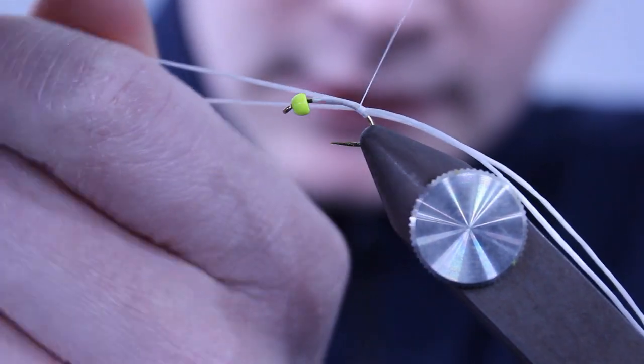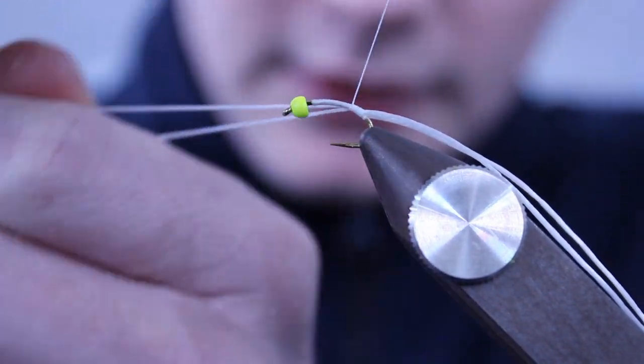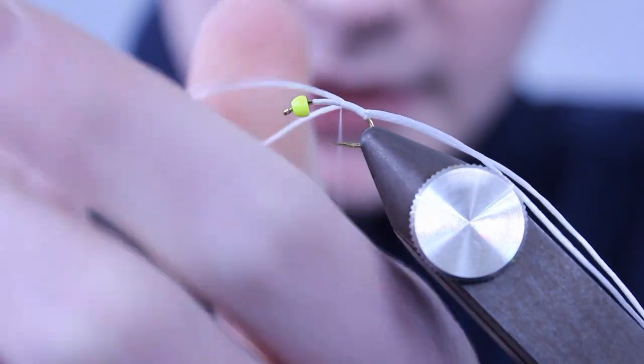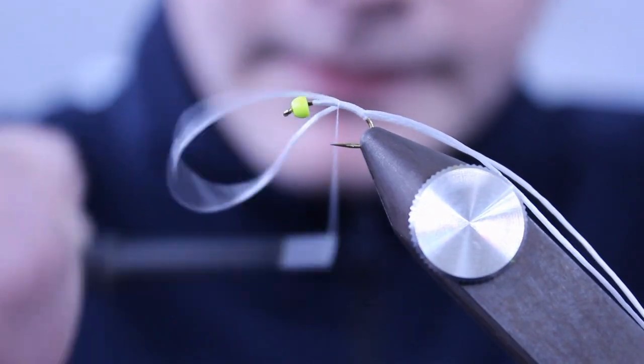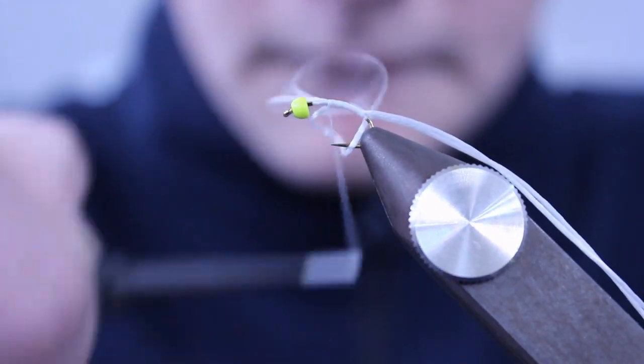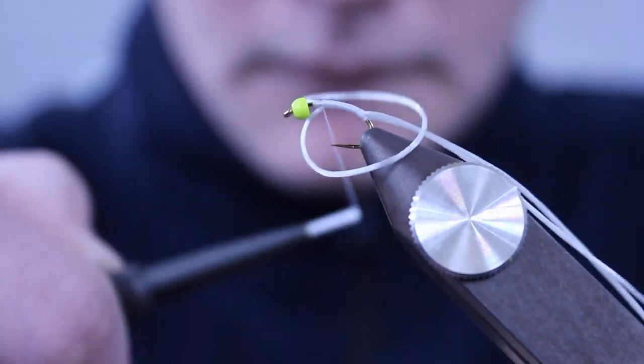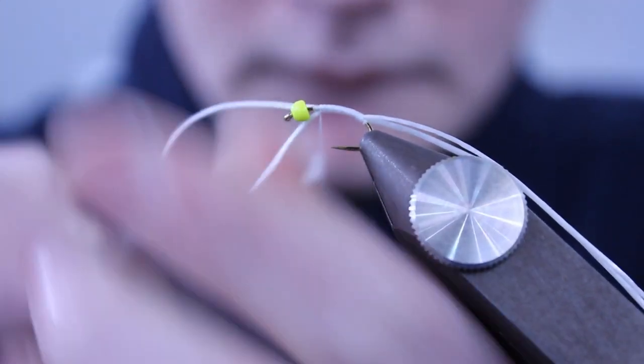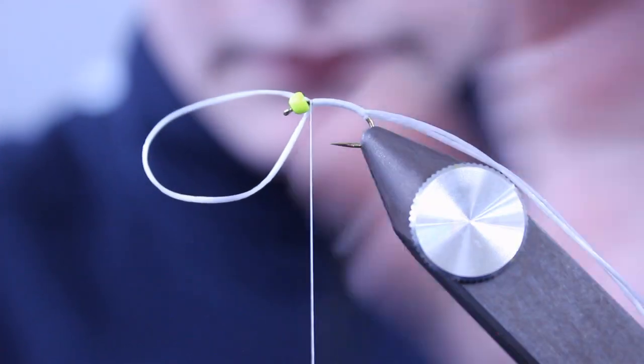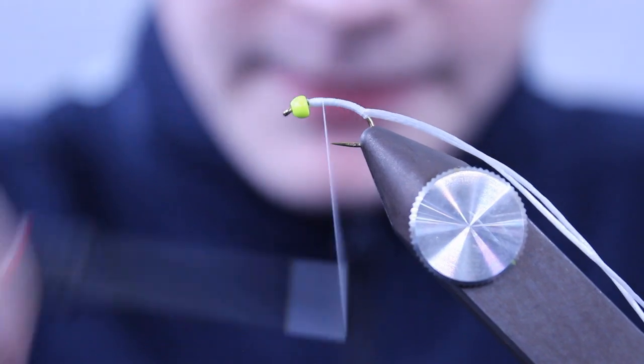Stretch your floss and tie it in with touching turns on the way back up the hook towards the bead. Cut away your excess and take your floss in touching turns back down the hook.